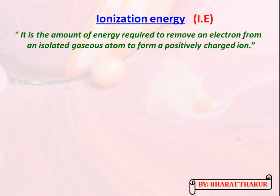The definition of ionization energy is that it is the amount of energy required to remove an electron from an isolated gaseous atom to form a positive ion. The words 'isolated' and 'gaseous atom' are very important in this definition. The equation can be represented as: M (gaseous) + ionization energy → M⁺ (gaseous) + electron.